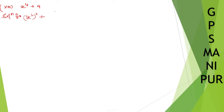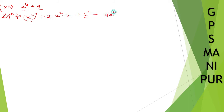Let us do a square plus twice a b — let us make it into that. Twice a b: a is x square, and b is 2. So b will be 2, plus 2 square. Now, x square whole square is x to the power 4, and 2 square will be 4. This one is extra — you cannot take extra. So what you are going to do is subtract what you have taken: minus 4x square.